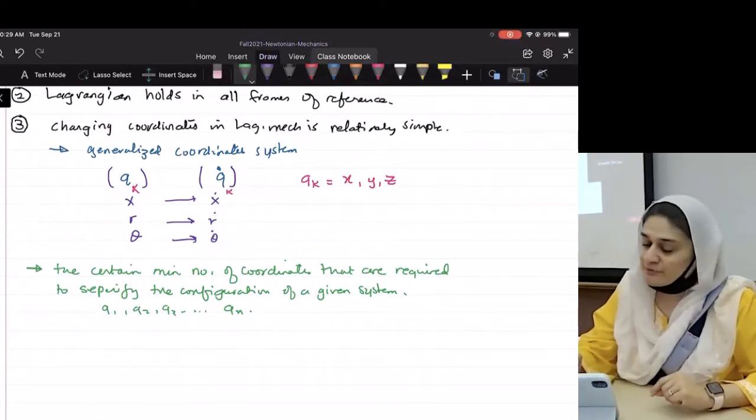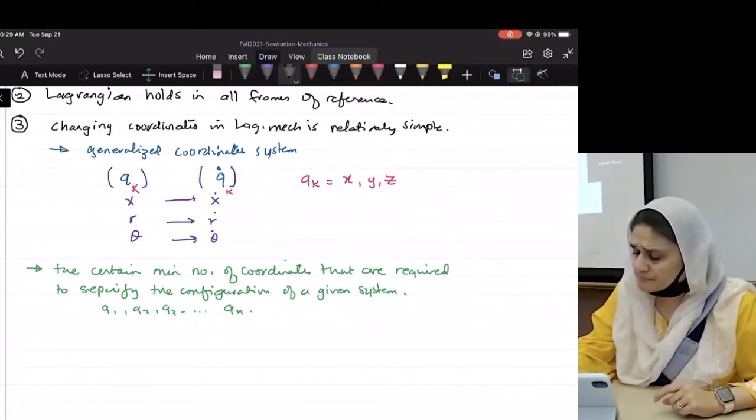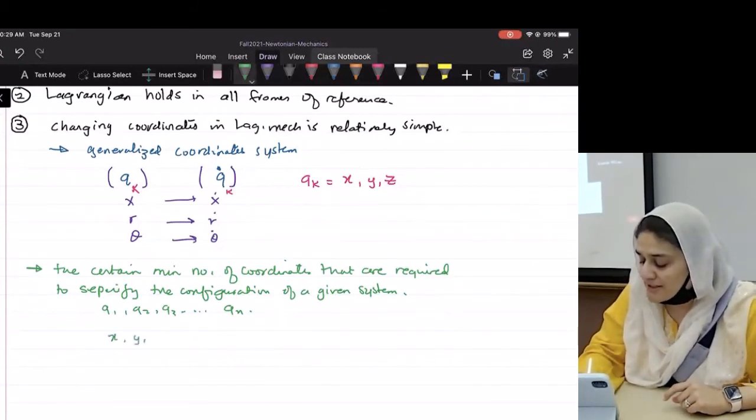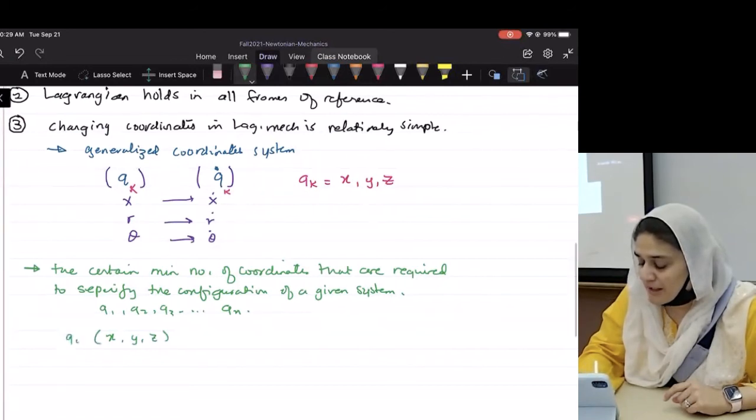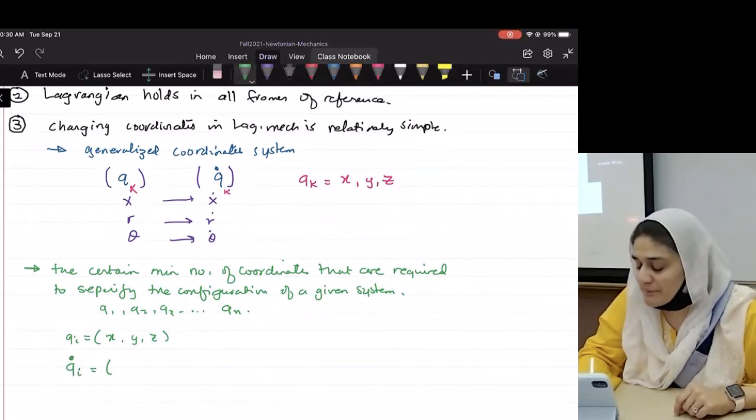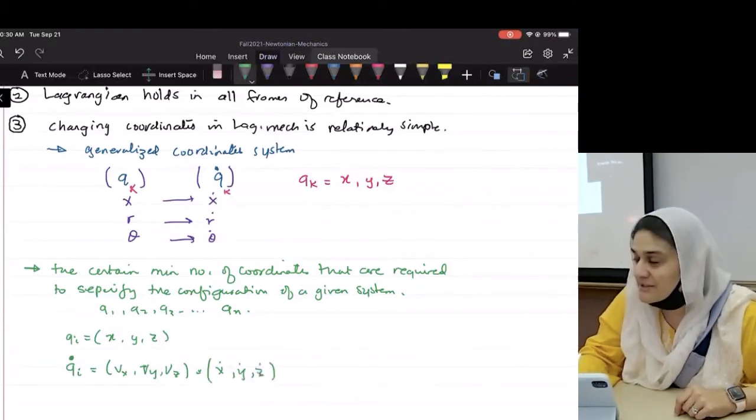Okay, the number fourth reason why this is important. Oh, and I did tell you, right? So if Q's are X's, for example, X, Y, Z, if our QI is X, Y, Z, then what is Q dot I? It's the first derivative with respect to time, what will it be? Exactly. So it'll be VX, VY, VZ, or X dot, Y dot, Z dot. So start getting familiar with this terminology.